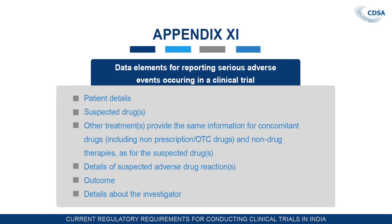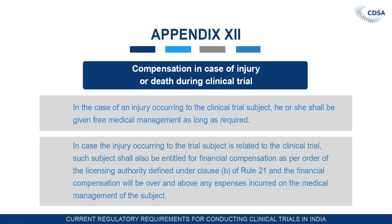Appendix 11 covers data elements for reporting SAEs occurring in clinical trials — including patient details, suspected drugs, other treatments, concomitant drug information including non-prescription drugs, details of the suspected adverse event, outcome, and details about the investigator. Appendix 12 covers compensation in case of injury or death during clinical trials.